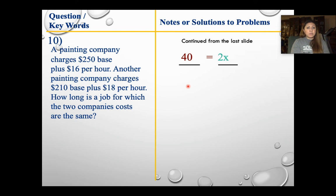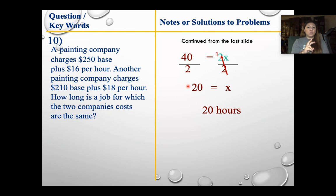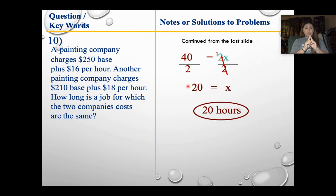Divide both sides by 2. 2 goes into 40 twenty times, so x equals 20. That means the two companies need to work for 20 hours before both companies are going to cost the same amount of money.